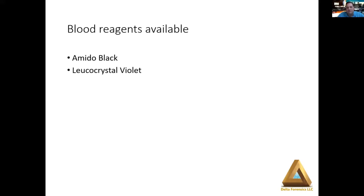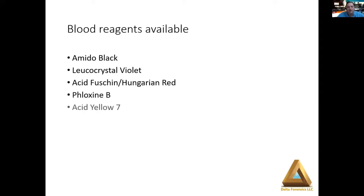The blood reagents commercially available that we're using in my laboratory are: amido black, leukocrystal violet, acid fusion — also known as Hungarian red — and then phloxene B and acid yellow 7. These are the reagents I'm going to speak about today.